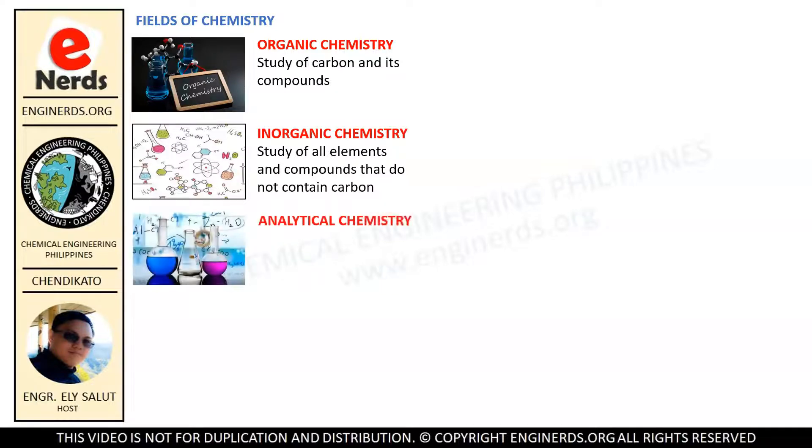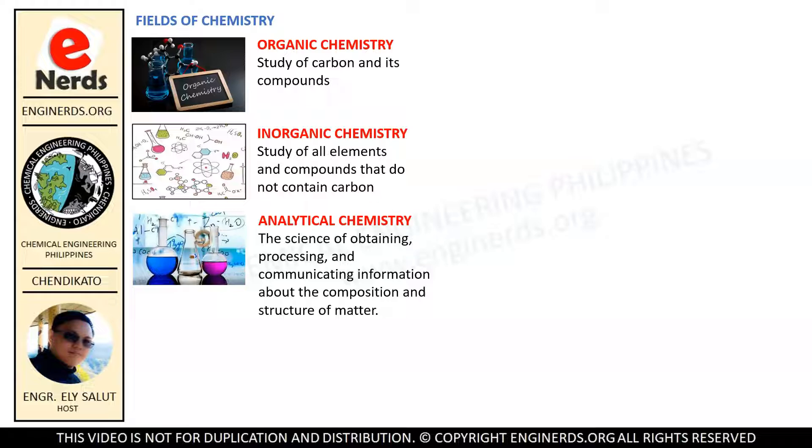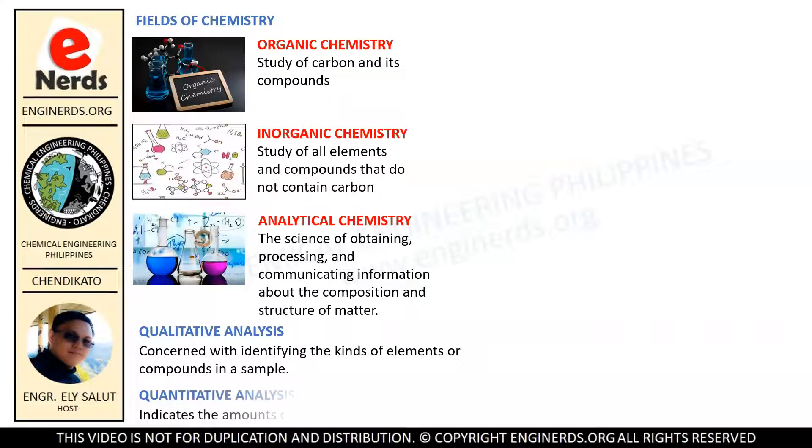Analytical chemistry is the science of obtaining, processing, and communicating information about the composition and structure of matter. It determines the identity or kind and quantity of each element or compound present in the substance. Qualitative analysis is concerned with identifying the kinds of elements or compounds in a sample, while quantitative analysis indicates the amounts of the elements present.